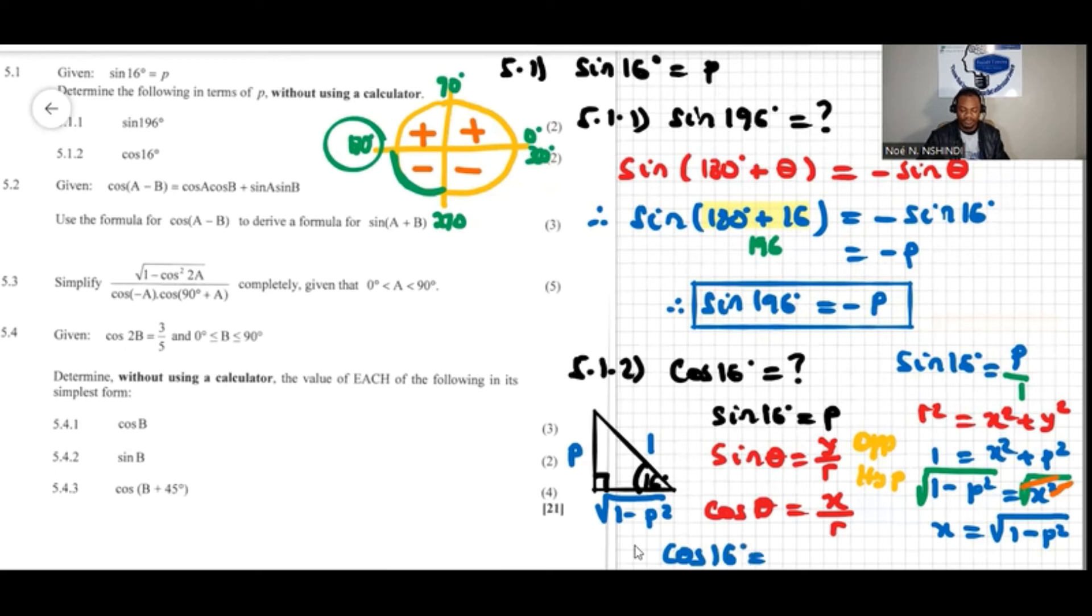So cos of theta will be equal to adjacent over hypotenuse. So cos of 16 degrees would be the adjacent side, which is square root of one minus p squared over hypotenuse which is one. So it's just square root of one minus p squared.